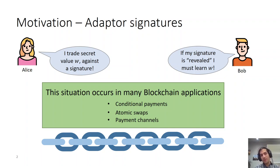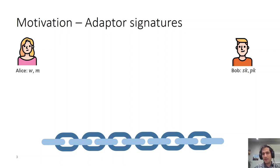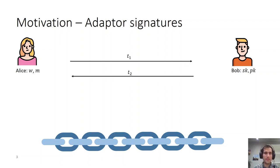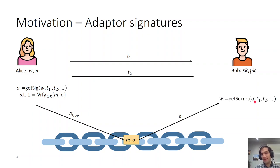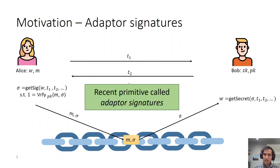Let's see on a high level what type of protocol we need in order to handle this exchange. Alice and Bob would start to communicate with each other. Alice sends some message T1 to Bob, Bob sends T2, and eventually Alice would be able to get a signature on the message M from Bob. She can extract the signature given the transcript of her communication with Bob and her witness. Bob, on the other hand, wants the guarantee that given his transcript and the signature extracted from the blockchain, he would be able to get Alice's witness. A recent primitive called adapter signatures satisfies what I just described. I will go into more details later, but now I want to give you the history of adapter signatures first.